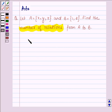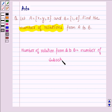Now, a relation from A to B is a subset of the Cartesian product of A and B. Therefore, the number of relations from A to B is equal to the number of subsets of the Cartesian product of A and B. So, this is the key idea we are going to use in this problem to find its solution.